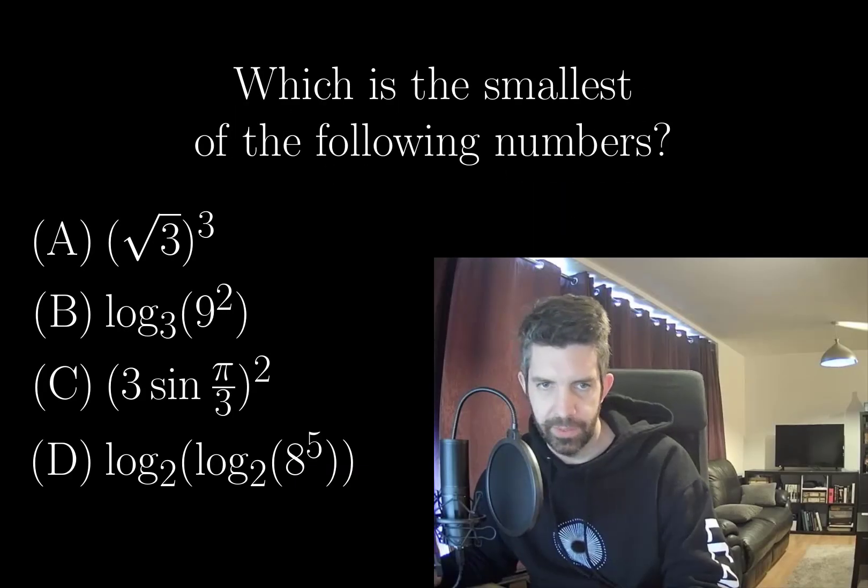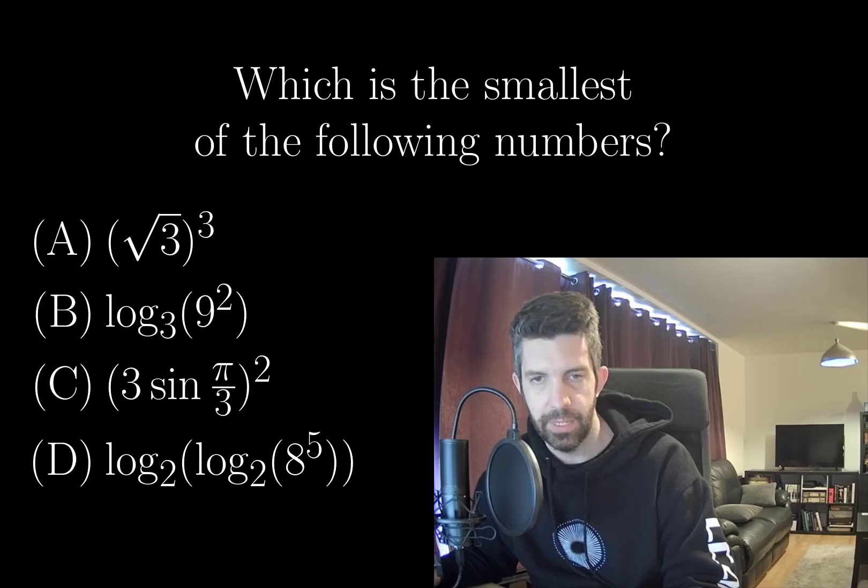Which is the smallest of the following numbers? Square root of 3 cubed, log base 3 of 9 squared, 3 sine of pi over 3 squared, or the log base 2 of the log base 2 of 8 to the 5?